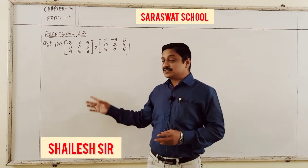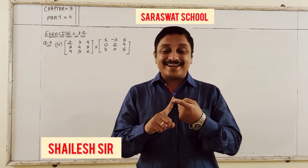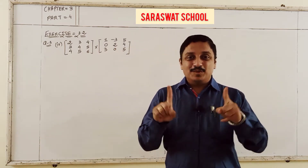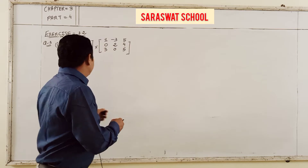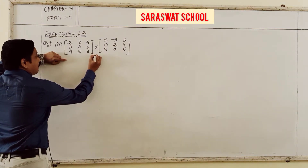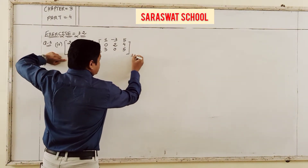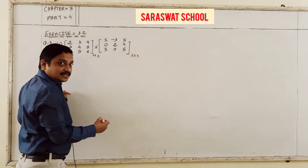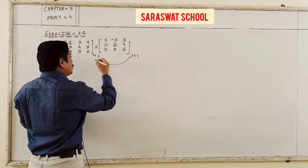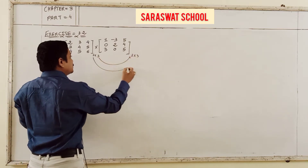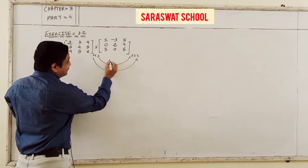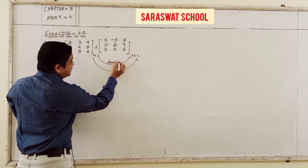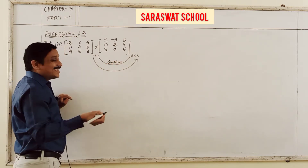We are looking at the product between two matrices. Whenever you find a product, you must check: the number of columns in the first matrix and the number of rows in the second matrix must be the same — then the matrix product exists. Here we start with a 3×3 times 3×3.